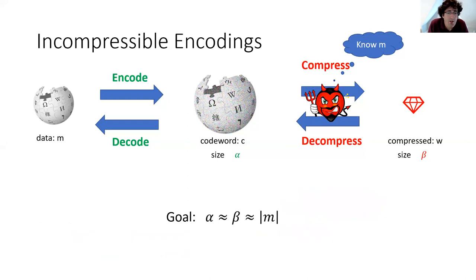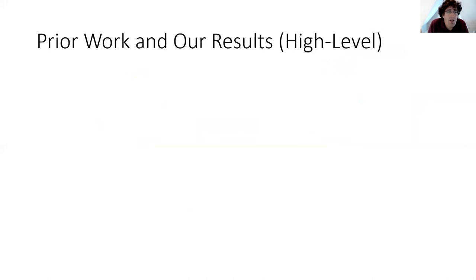The goal is to come up with a scheme where the size of the codeword alpha is as close as possible to the original data size — we don't want to add much overhead — and it should be incompressible almost to the entire codeword or data size, so the adversary cannot compress it much beyond the underlying size of the data. This problem was actually introduced in prior work, so I'll tell you a little about the prior work and our results.